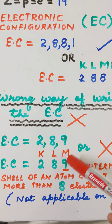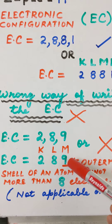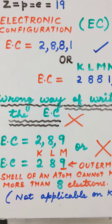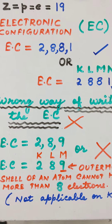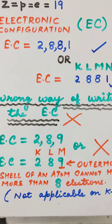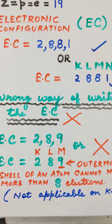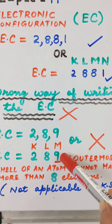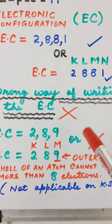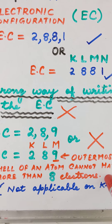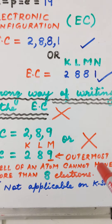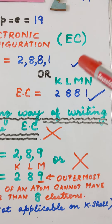Now, if we put nine electrons in the M shell, this is actually incorrect. The reason is the third rule, which states that the outermost shell of any atom can never have more than eight electrons. So putting nine electrons in the M shell does not follow the third rule.